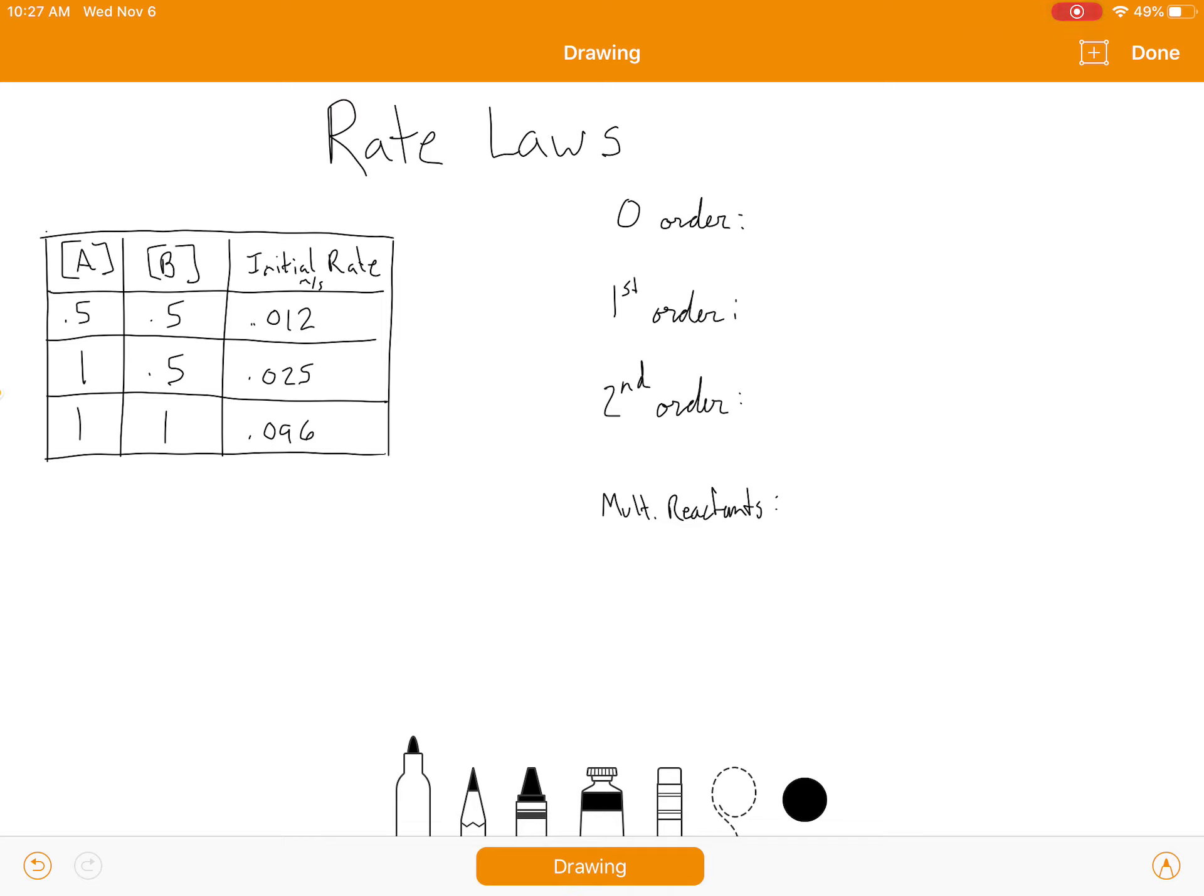Hopefully this is review, but the rate law shows the relationship between initial concentration and initial rate. So we'll have data that tells us concentrations along with rate. For the integrated rate law, your data would be time and concentration, but for the regular rate law, it looks like the data that is presented over here has concentrations and rate.